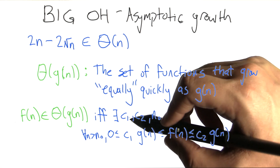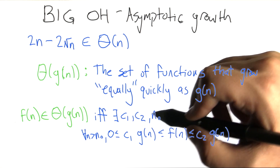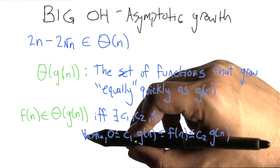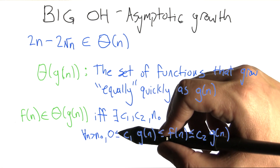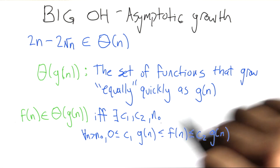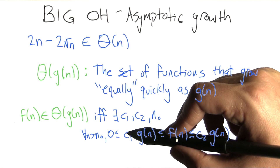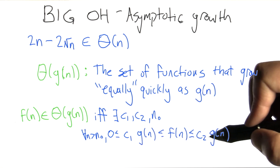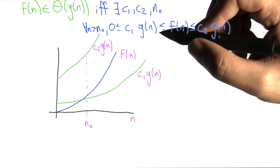If and only if there's some constants c1 and c2 and some threshold n0, such that for any n bigger than n0, the function f of n, for all these big values of n, is sandwiched between c1 times g of n and c2 times g of n.